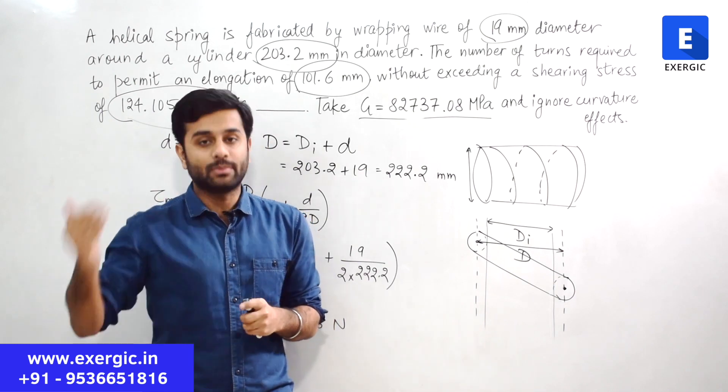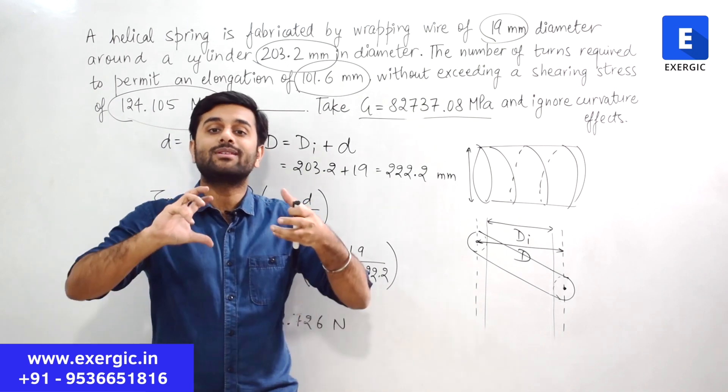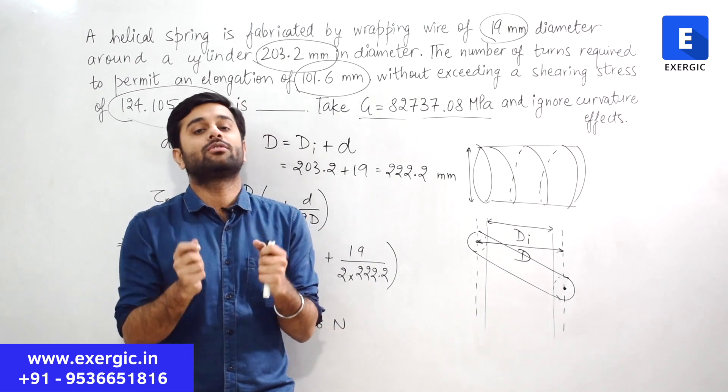Like you have a case of torsion where it has given you the condition of shear stress also that it should not cross that much. So from the strength criteria also you have to design and it has also given you that how much angle of twist is permissible. So from the deflection criteria also you have to design.